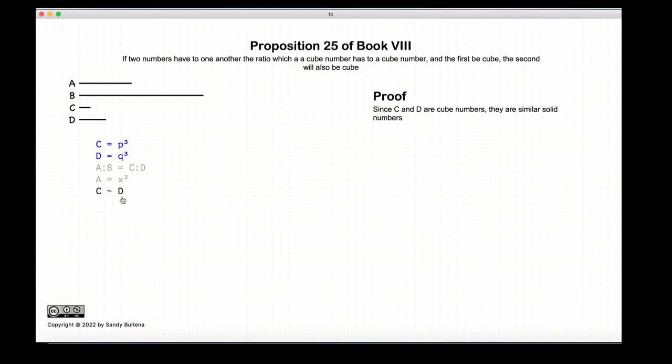So let's prove this. We start off with our two numbers C and D that are cubes. They are similar solid numbers by the definition of similar. In other words, the sides are proportional, so P to P to P is equal to Q to Q to Q.